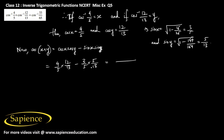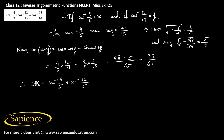Taking the LCM as 65, we get 48 minus 15, which gives 33 by 65. So therefore from the left hand side, cos inverse 4 by 5 plus cos inverse 12 by 13, that is equal to x plus y.